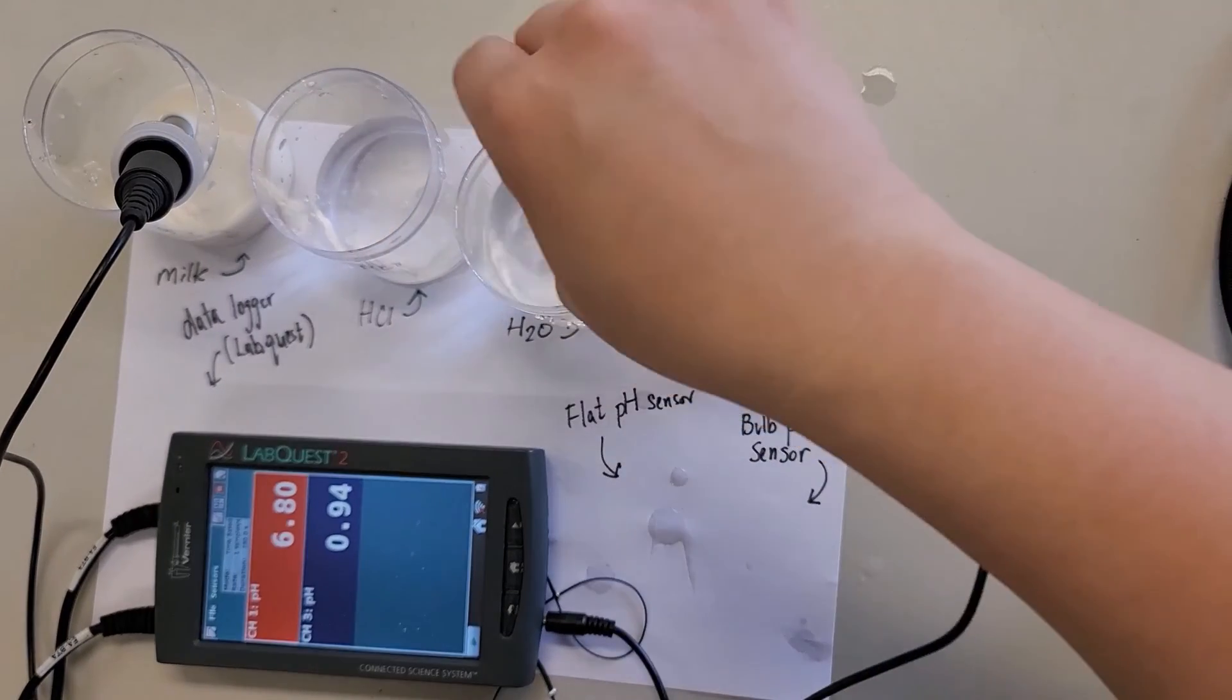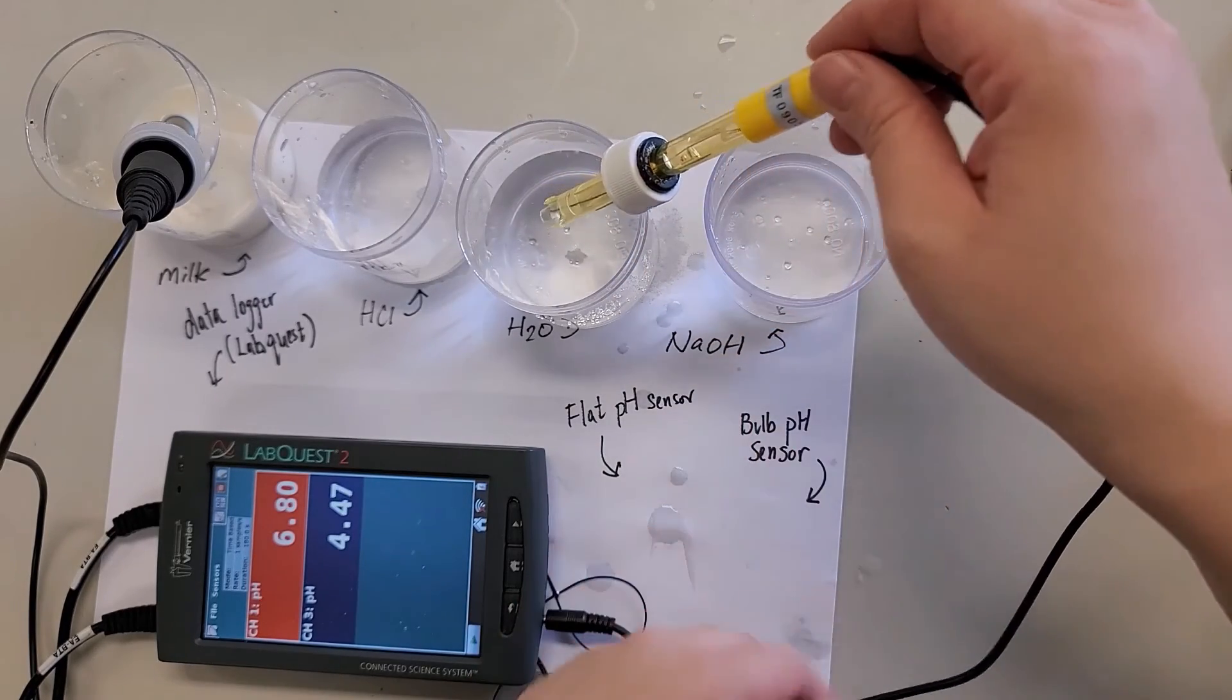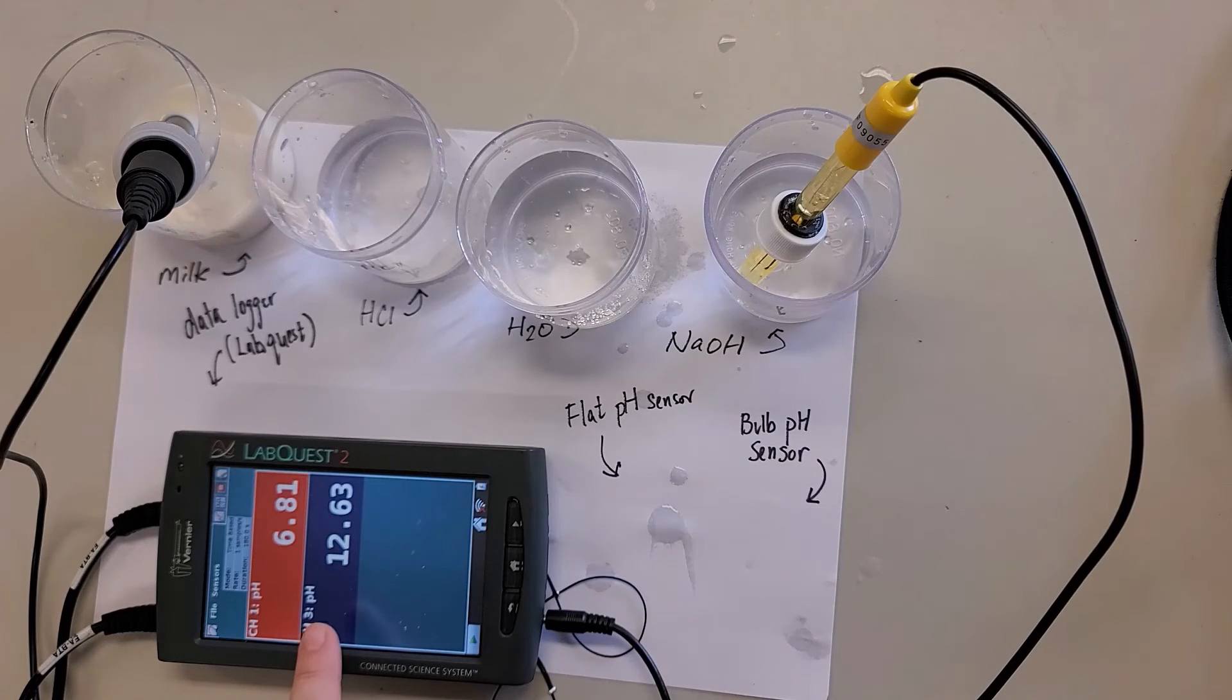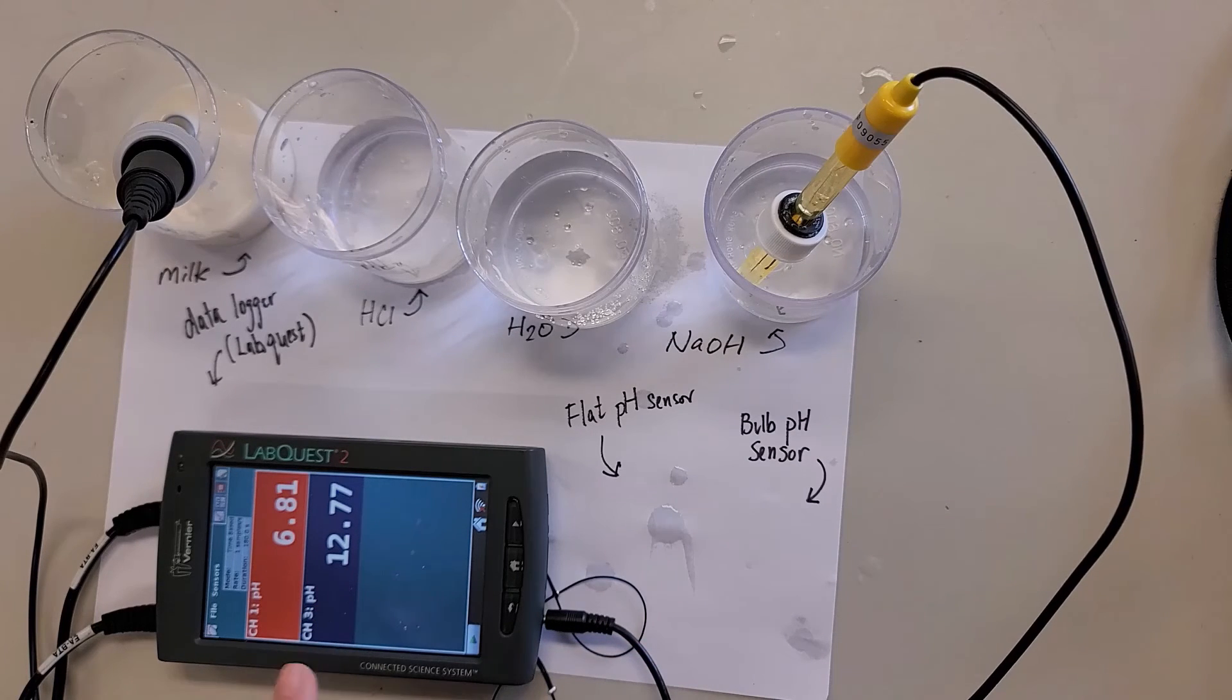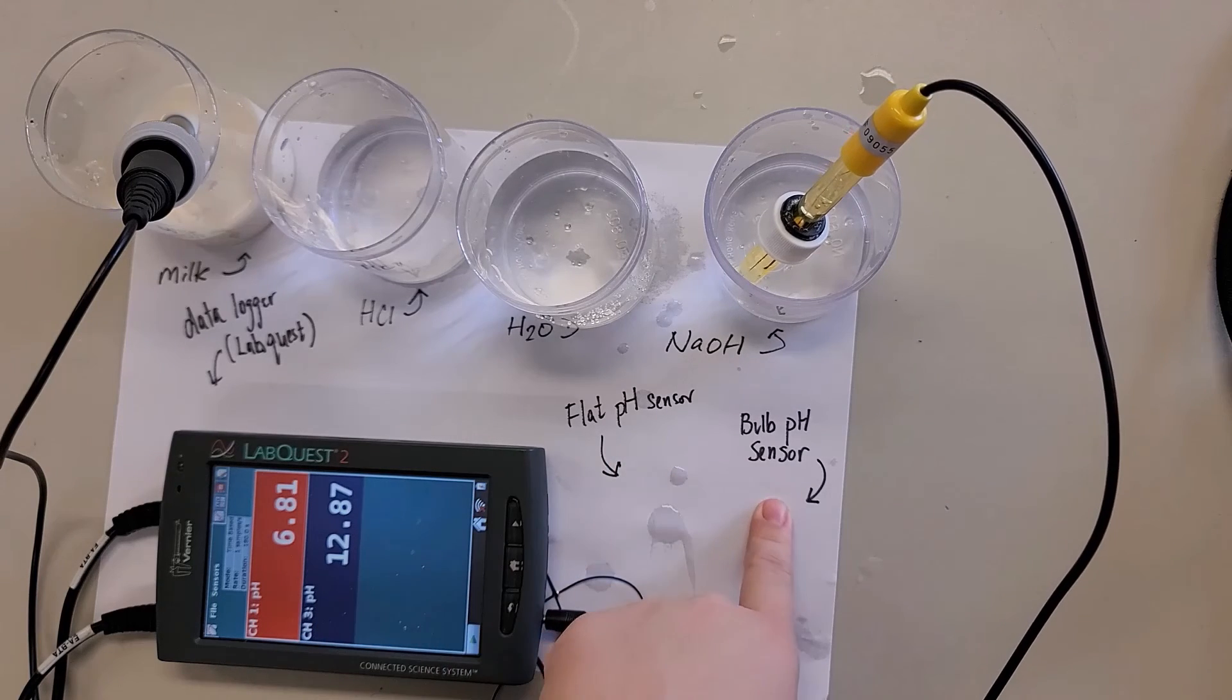And then let me just rinse with water again. And then try with alkaline solution, NaOH. Now it's rising very rapidly as well. Can you see? This one is like 12 point something. So that is how we use the flat pH sensor and the bulb pH sensor.